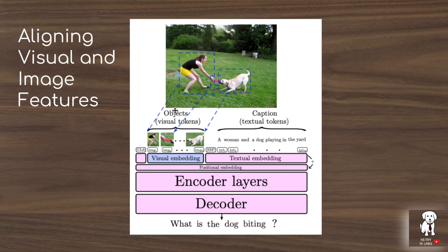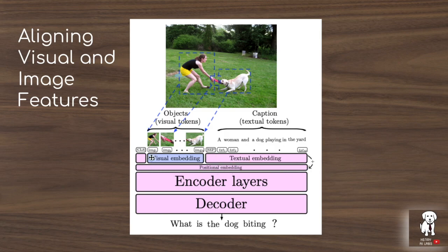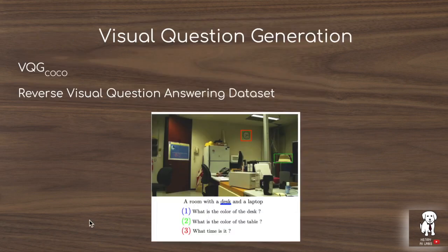The setup takes 36 regions of interest from the Faster RCNN model. The first-dimension embedding of these regions is about 2304, while BERT text embeddings are 768×1 vectors. A linear projection matrix W maps the 2304-dimensional Faster RCNN embeddings down to 768-dimensional vectors compatible with BERT input. These projected vectors go into a positional embedding that treats visual tokens like a sequence, then into the BERT encoder, which the authors restructure as a decoder for visual question generation.